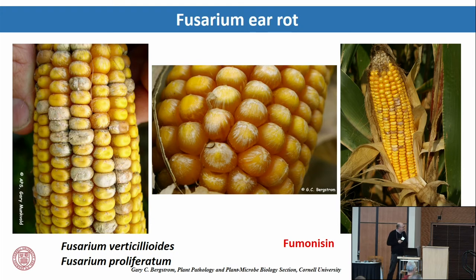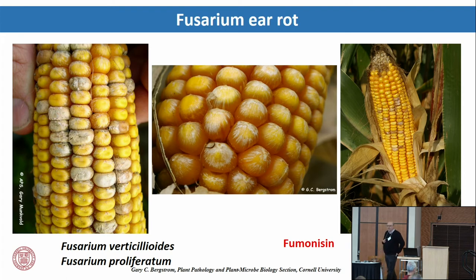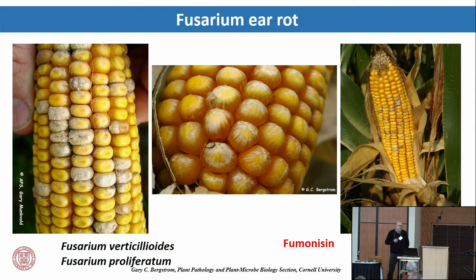Fusarium ear rot — primarily Fusarium verticillioides — is not so obvious in the corn ears. One of the prominent things it shows is what I call the starburst pattern on the kernels, very typical of infection by this organism. This is the producer of fumonisin. Before last year, I saw just very tiny amounts of fumonisin in our corn, but we've been seeing one or two parts per million occasionally — getting close to levels of concern.